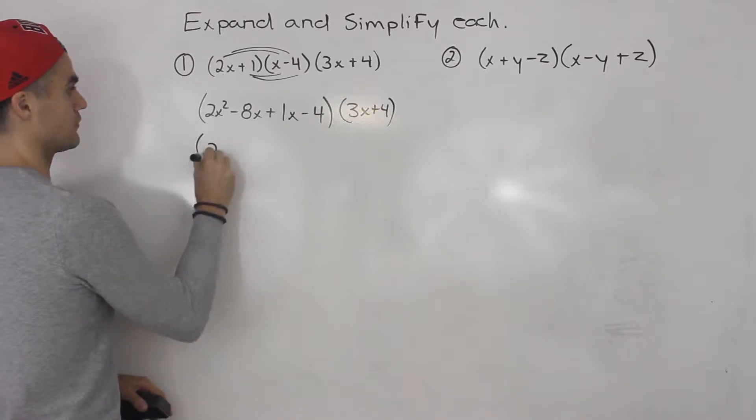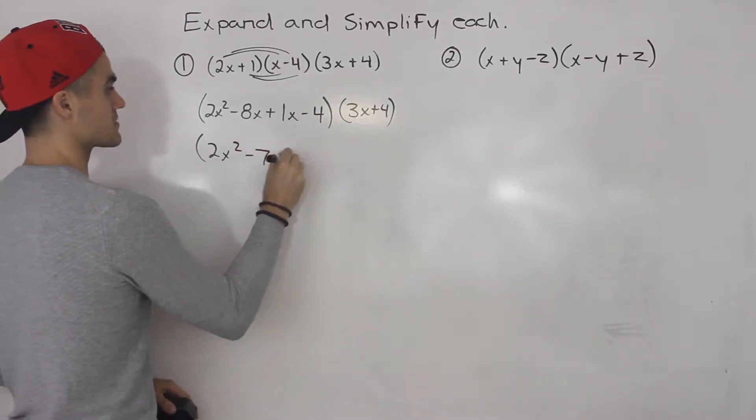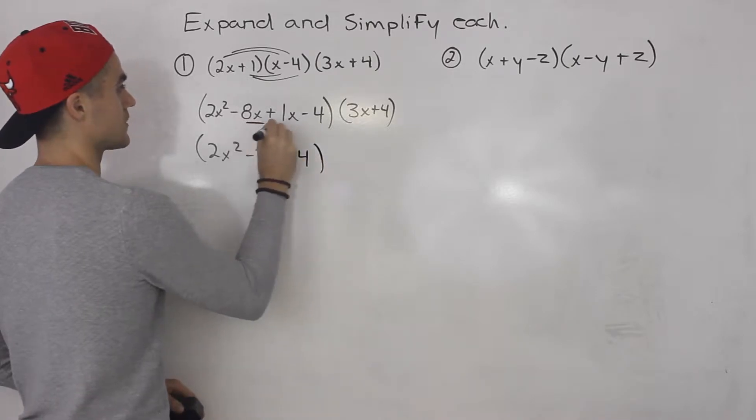Then over here we could simplify so we'd have 2x squared minus 7x minus 4. These two are like terms.